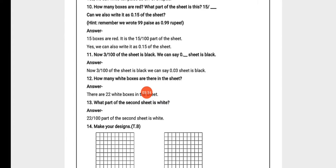That means the red colour is covering 0.15 portion of the sheet. Now Question 11: 3 upon hundredth of the sheet is black — we can say 0.1__ is black. Sheet का 3 upon hundredth part जो है वो black है। Will we write 0.3 or 0.03? We write 0.03 because there are 100 total boxes — 2 digits must come after the point since 100 has 2 zeros. So we write 0.03 — 3/100 of the sheet is black.